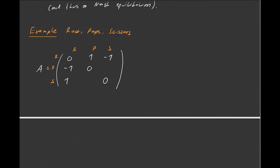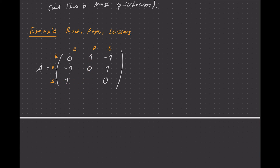Finally, for the remaining two entries: if the row player plays paper and column plays scissors, scissors cuts paper, so scissors wins — there's a payment of 1. Conversely, if the row player plays scissors and column plays paper, the column player wins, so there's a payoff of −1.